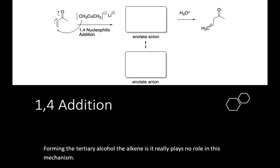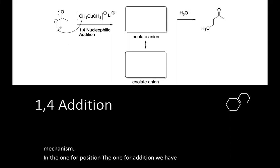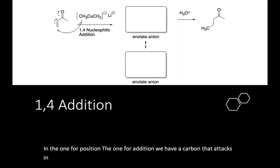In the 1,4 position, the 1,4 addition, we have a carbon that attacks in the 1,4. This is also a carbon with a lone pair. The electrons are moved up, forming two possible enolates.